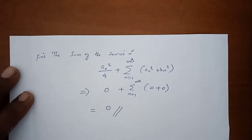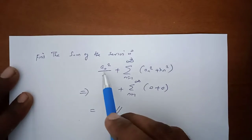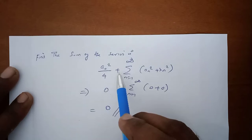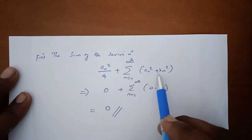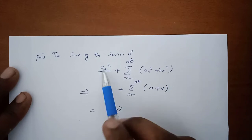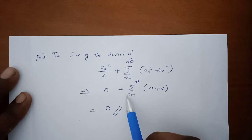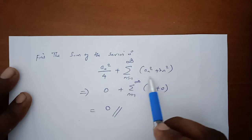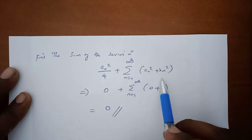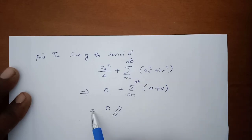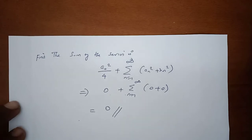Finally, applying Parseval's formula: a₀²/4 + sigma n=1 to infinity of (aₙ² + bₙ²). Since a₀ = 0, this term is 0. Since aₙ = 0 and bₙ = 0, sigma term is also 0. The entire sum equals 0, hence the problem is solved.